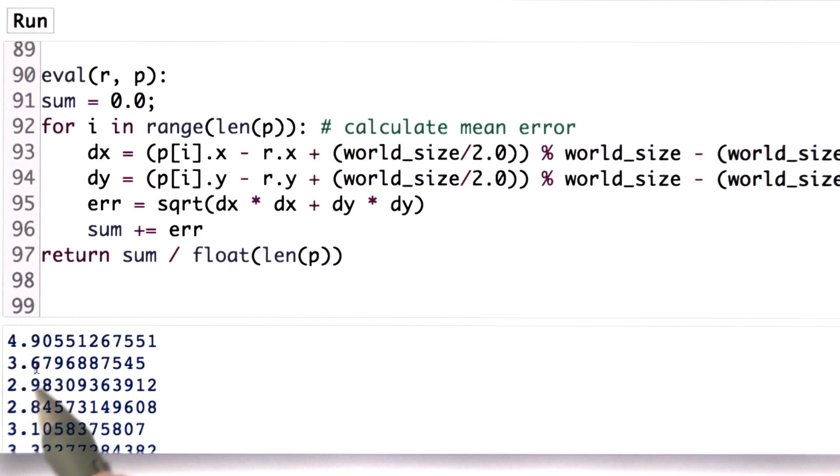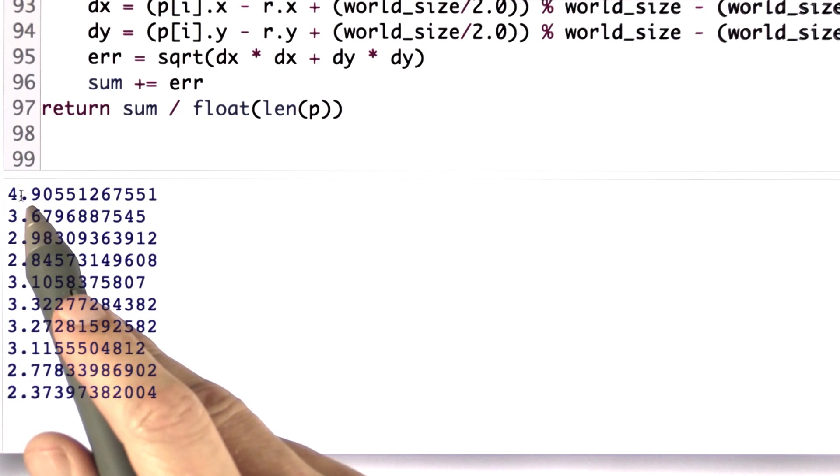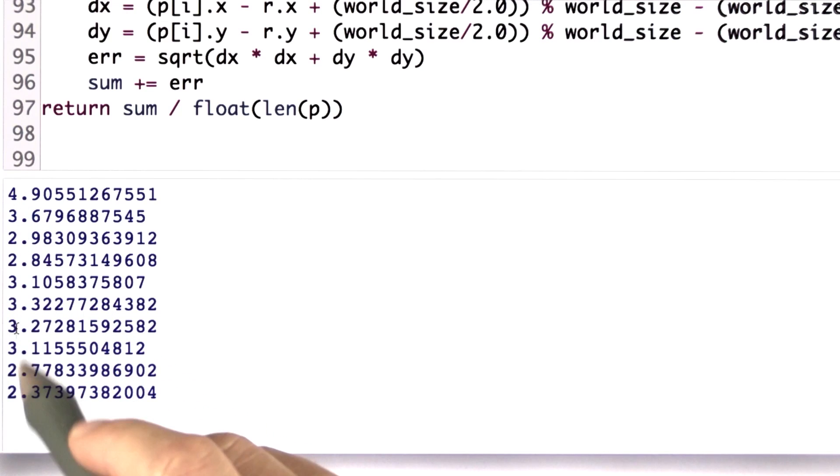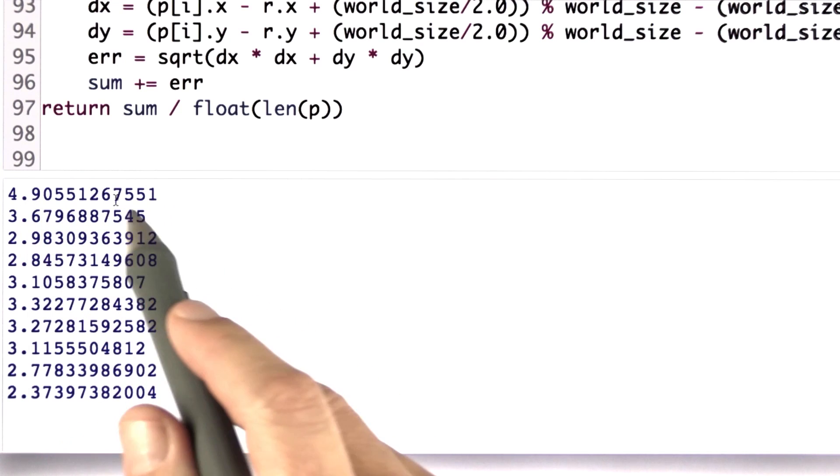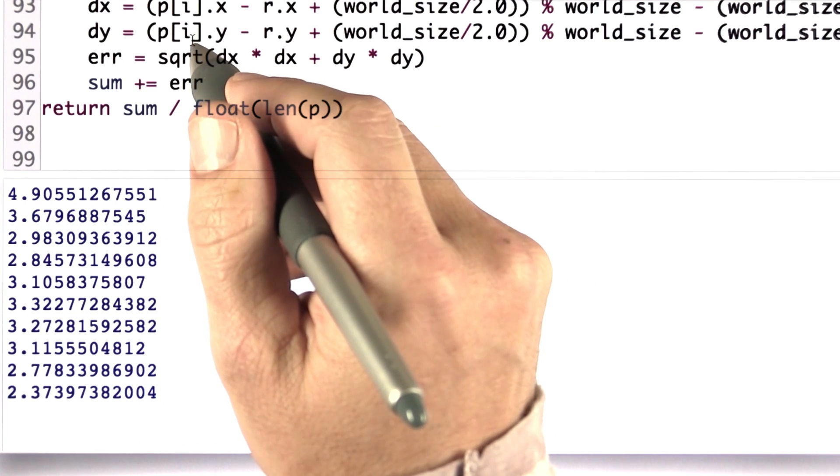4.9, 3.6, 2.9, 2.8, 3.1. This is the residual error. Remember, it's a world of size 100 by 100, so this is actually a relatively small error compared to the world size. Can you code it so I get for each iteration the error number produced by this routine?